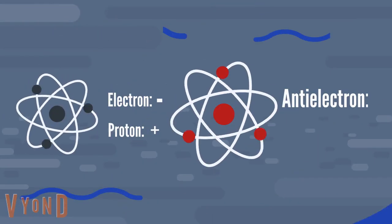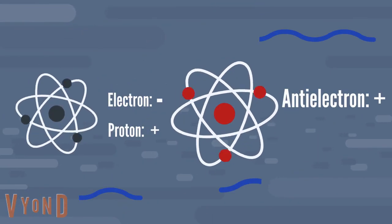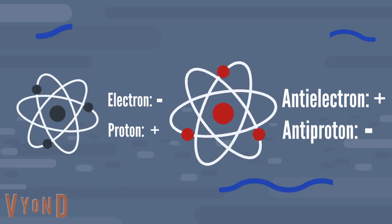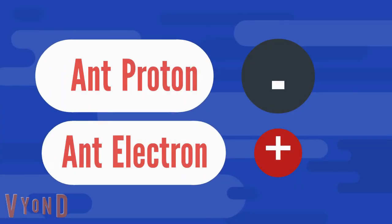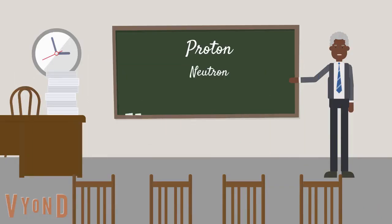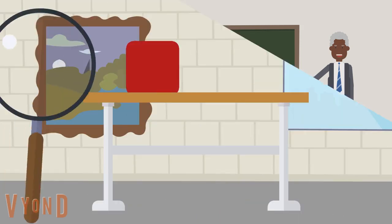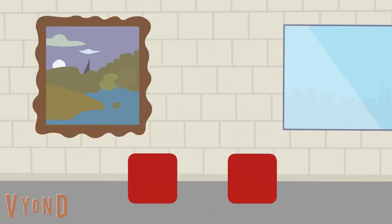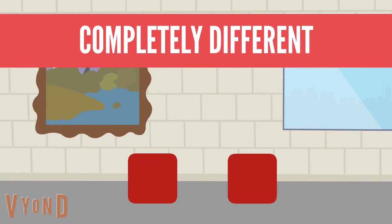An antimatter electron has a positive charge, and an antimatter proton has a negative charge. It's like a flipped version of the matter we learn about in school. A chunk of it would look and behave identically to matter. Yet it's completely different.